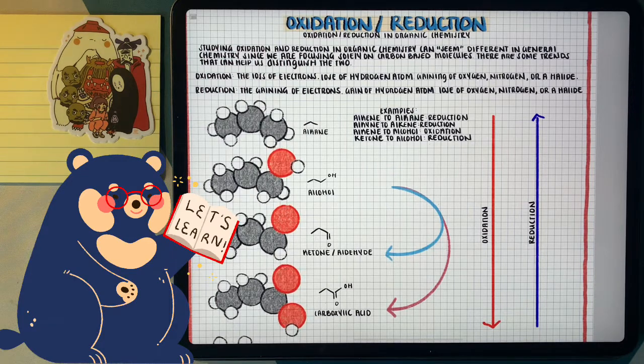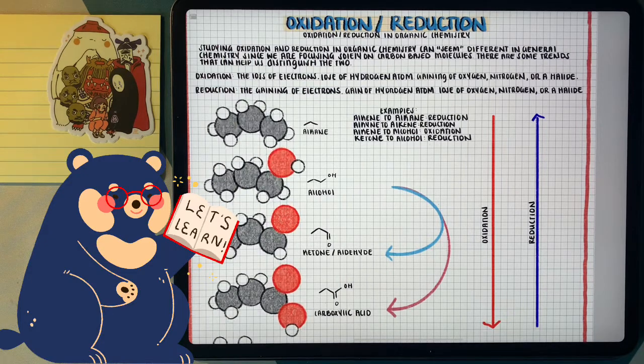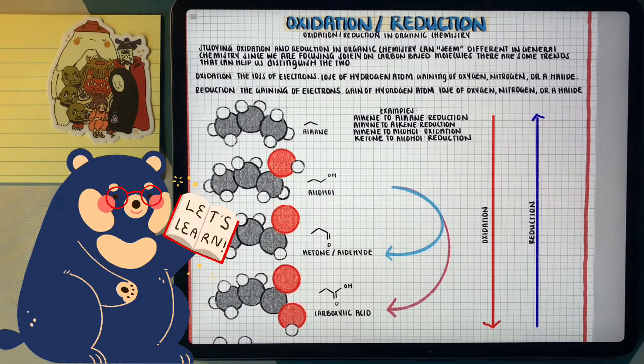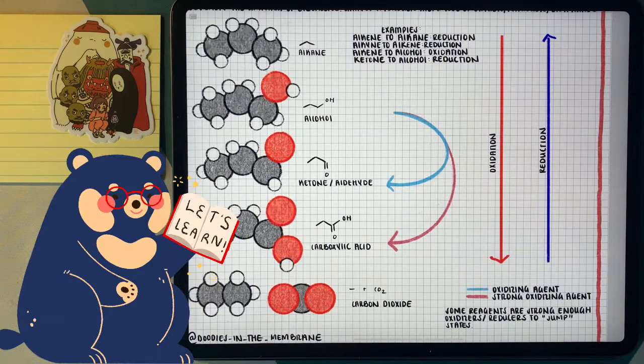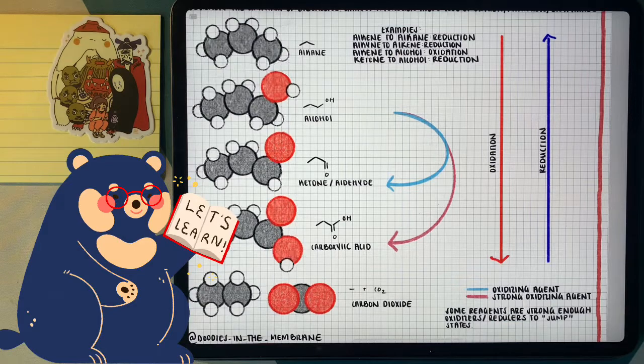So when it comes to organic chemistry, oxidation and reduction becomes more of a trend than it does a counting of oxidation numbers like we did in general chemistry. One of my favorite trends to focus on to see the relationship between oxidation and reduction is to look at the alcohol. From the alcohol to an aldehyde or carbonyl group, having that double bond to the oxygen, that's an oxidation process.